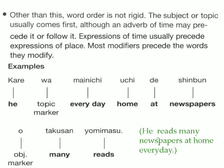Other than this, word order is not so rigid. The subject or topic usually comes first, although an adverb of time may precede or follow it. Expressions of time usually precede expressions of place, and most modifiers precede the words they modify.